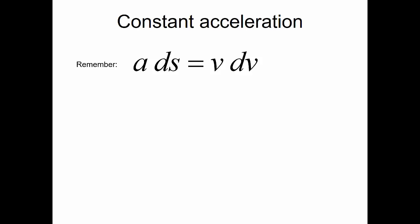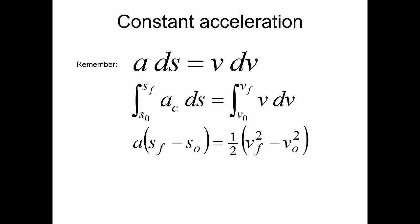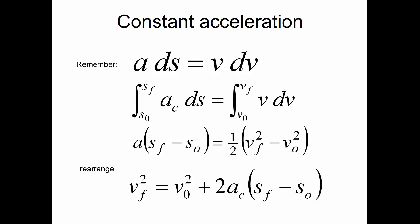Again, let's look at constant acceleration. Remembering that a·ds equals v·dv, if we integrate that function, assuming that our acceleration is constant, we would get the acceleration times our final position minus our initial position is equal to one-half times our final velocity squared minus our initial velocity squared. Rearranging this gives us that the final velocity squared is equal to the initial velocity squared plus two times the constant acceleration times our final position minus our initial position.